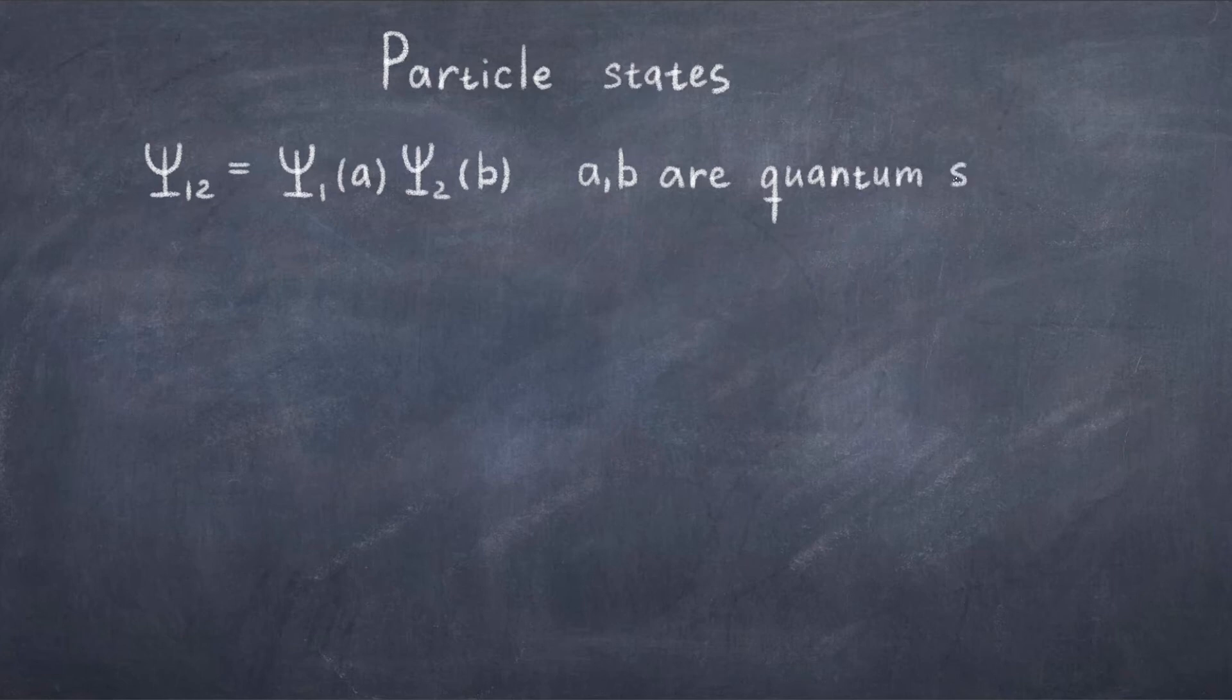But in quantum physics, this is not the case. If you consider two electrons, they are indistinguishable. Labeling them 1 and 2 is meaningless in a practical sense, you just have two electrons, there is no way to physically label them, it's only a theoretical thing.